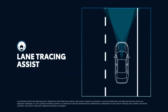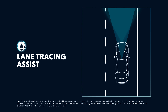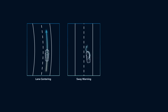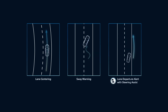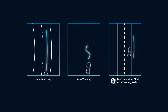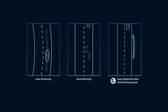Lane Tracing Assist, or LTA, uses the lines on the road and preceding vehicles to help keep your vehicle centered and in its lane. To achieve this, LTA incorporates functions like Lane Centering, Sway Warning, and Lane Departure Alert with Steering Assist. Lane Departure Alert is considered a separate feature within the TSS suite, but it's best thought of as part of Lane Tracing Assist as far as its settings and controls are concerned.